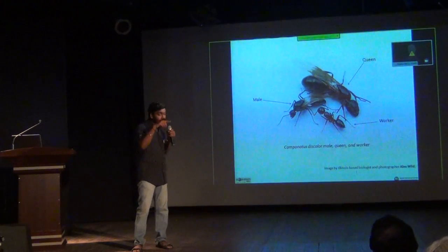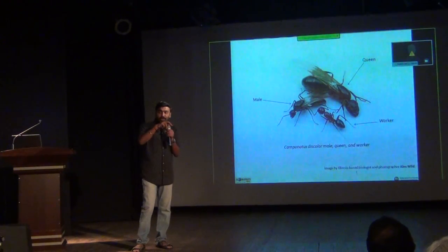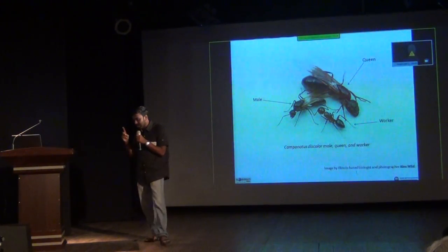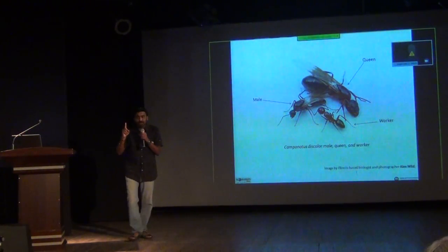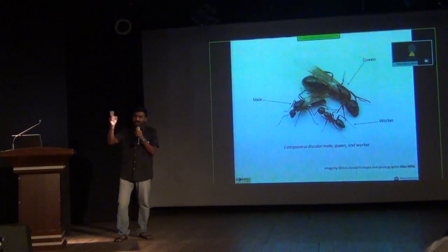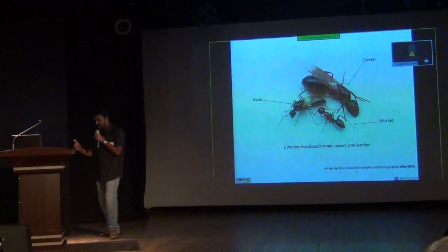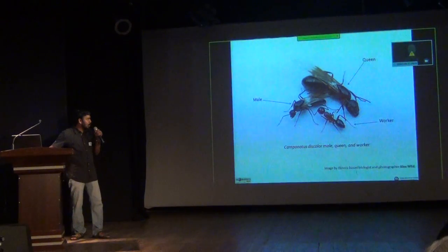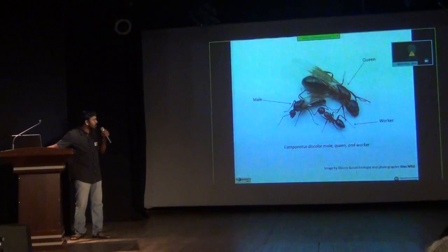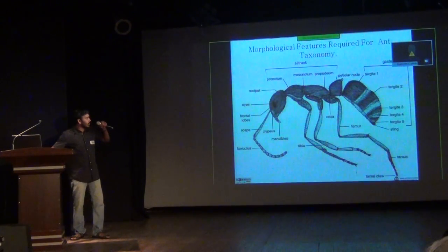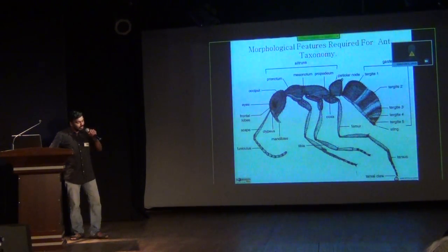A lot of times we see these queens come to our lights and bulbs when it rains, and termites also come along with them. So a lot of times people get confused whether a termite is an ant or an ant is a termite — that is something I would like to address later on.